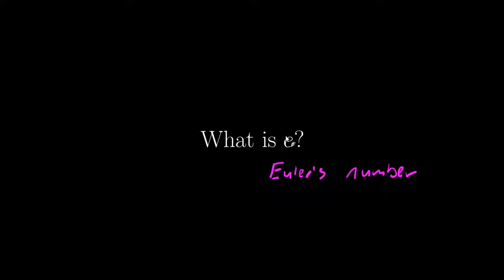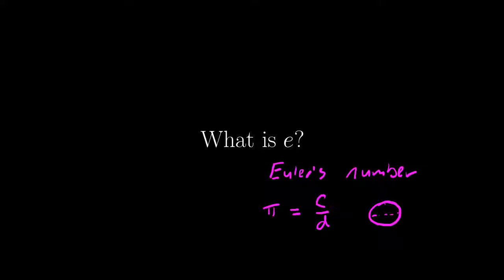Before I jump into this, it should be kind of interesting to us that we understand very well what pi is. Pi is an irrational number that helps us find the area and circumference of a circle, and pi is just the circumference divided by the diameter of any given circle. No matter how large or small, the circumference divided by the diameter gives me pi. But what is this E? Let's jump into that.